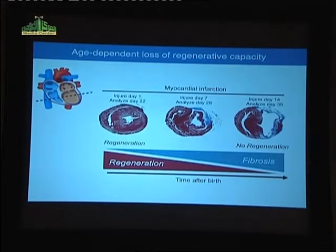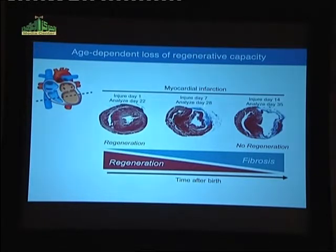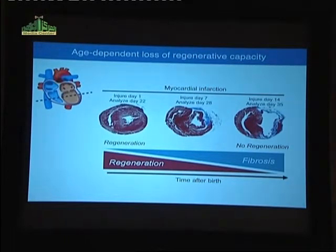We developed methods for tying off the coronary arteries and inducing a myocardial infarction. We would induce an infarct beginning on day one after birth, and look at the animals 21 days later. If you induce a myocardial infarction at day one and look 21 days later, there's no evidence for a myocardial infarction in these hearts, indicating they have fully regenerated all of the ventricular myocytes. If we delay the injury to day seven, there's evidence of regeneration but also a prominent scar forming.